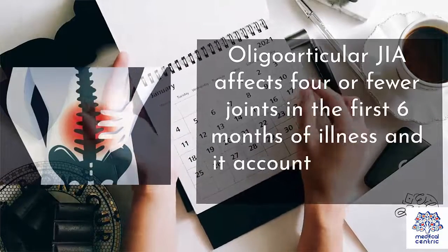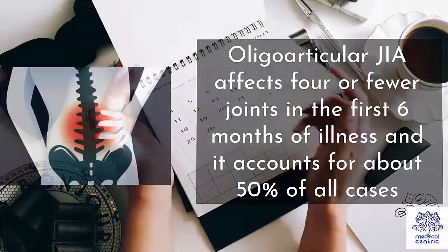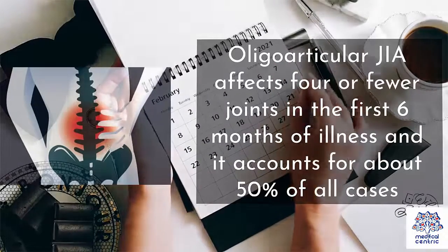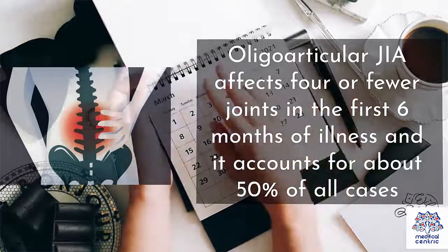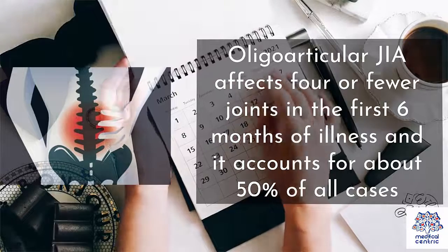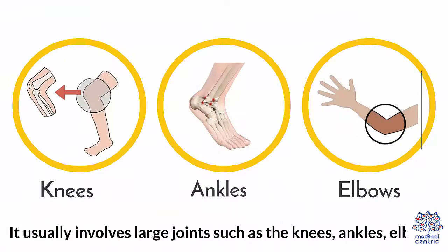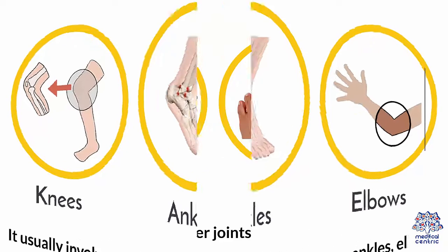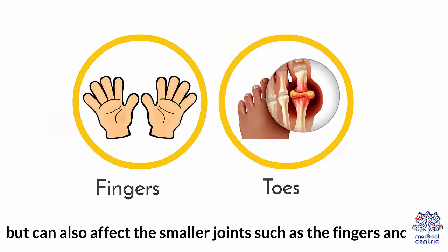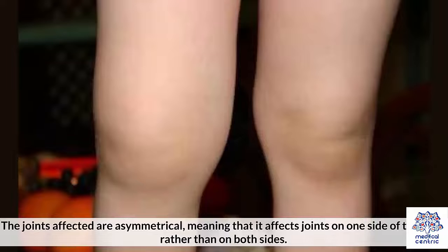Oligoarticular JIA affects four or fewer joints in the first six months of illness, and it accounts for about 50% of all cases. It usually involves large joints such as the knees, ankles, and elbows, but can also affect the smaller joints such as the fingers and toes. The joints affected are asymmetrical, meaning that it affects joints on one side of the body rather than on both sides.